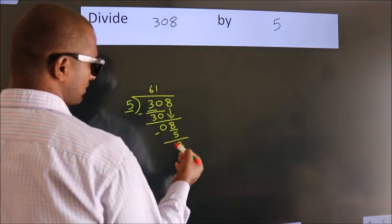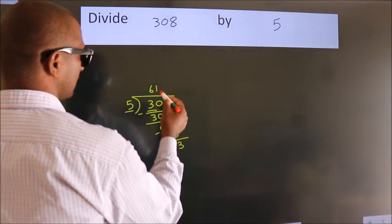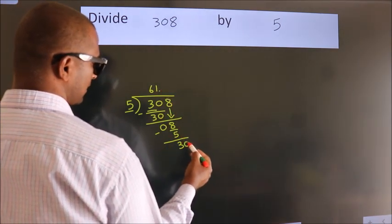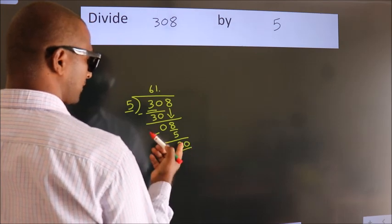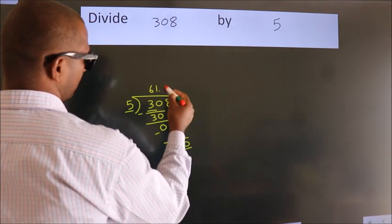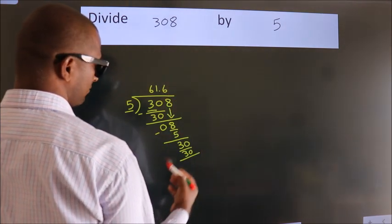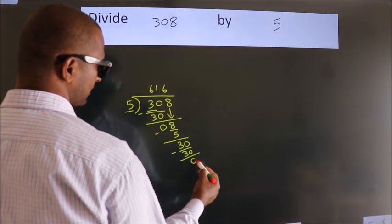After this, no more numbers to bring it down. So what we do is, we put dot take 0. So 30. When do we get 30? In 5 table. 5, 6, 30. Now we subtract. We get 0.